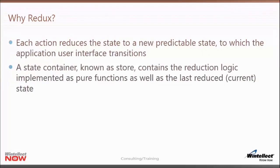Each action reduces the state to a new predictable state. If we have a given action and a given state and run it through Redux — through our reducer function — it will produce a new state that we can predict. If we take that same action and same state and run it again, we'll get the same predictable state. You'll never have the same action with the same state yield a different state result. It's this new state that's used to actually transition the user interface.